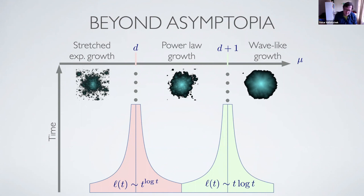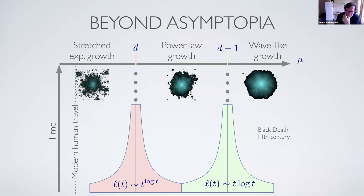I particularly like this threshold between power-law growth and fast stretched exponential growth — in between you have the nice behavior t to the power of log t. That's the picture we end up with. The black death must be somewhere in the finite-speed regime. Modern human travel, looking at the dollar-bill data, is deep in the regime of stretched exponential growth.